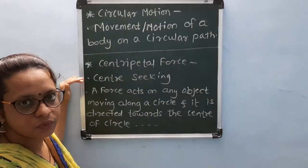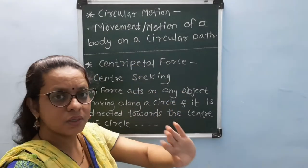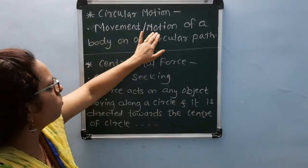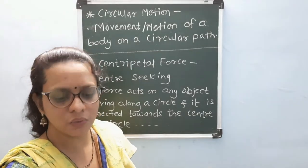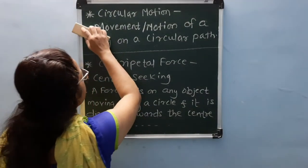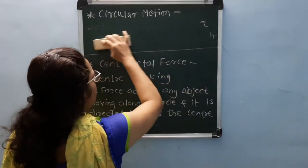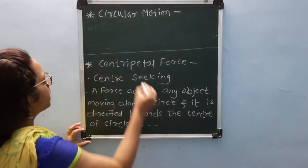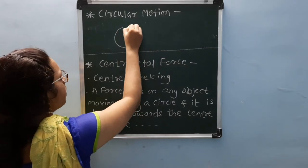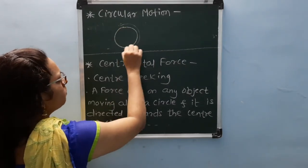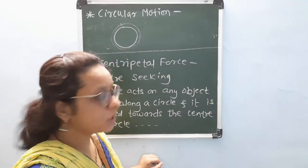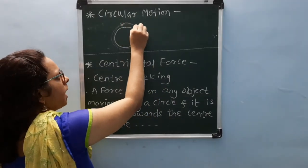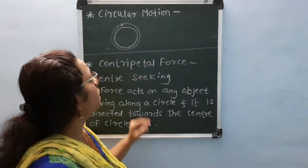Circular motion and centripetal force. Now, circular motion — you already know that. What is circular motion? The movement or motion of any body on a circular path is called circular motion. How are we performing circular motion? Suppose there is a circular playground and you are riding a bicycle or running from one point back to the same point. That motion is called circular motion.